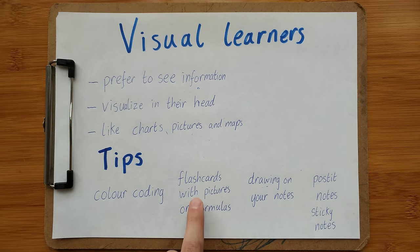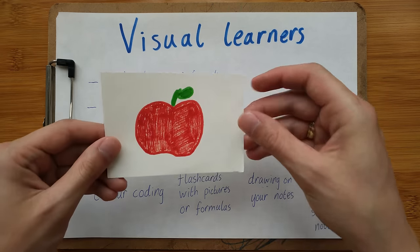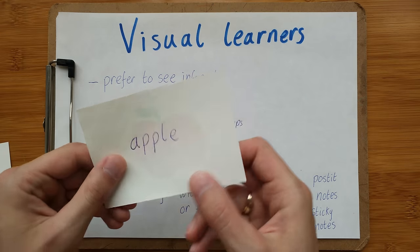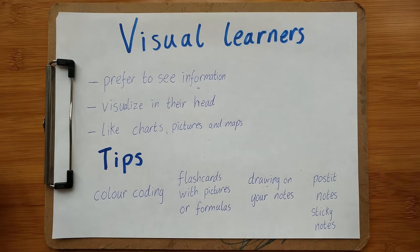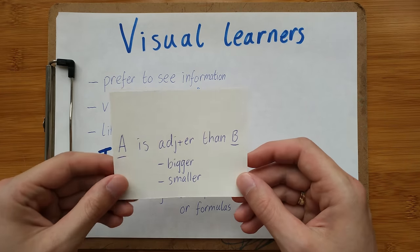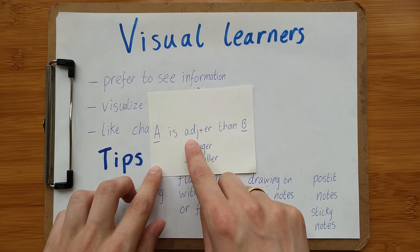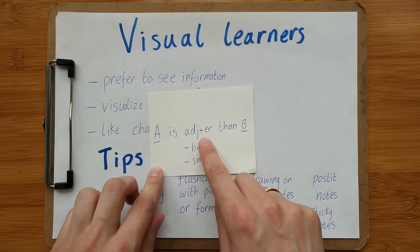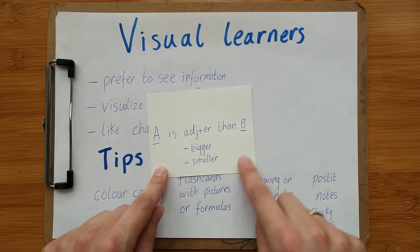Another way is using flashcards with pictures or formulas. You could have a flashcard with a picture on one side and the English word on the other, or you can make a flashcard with a formula — for example, A is adjective plus -er than B, for bigger and smaller comparisons. It helps you visualize the information.